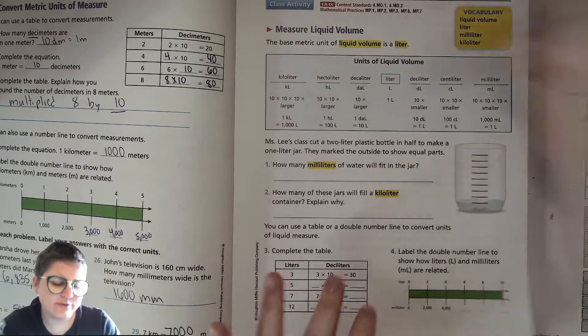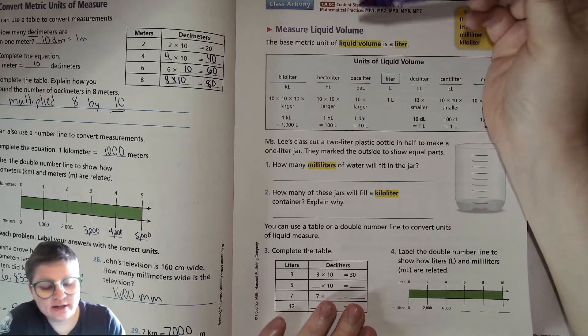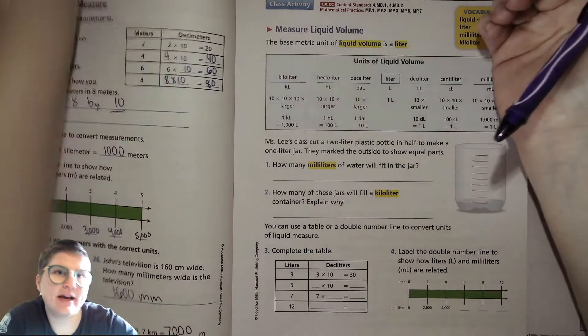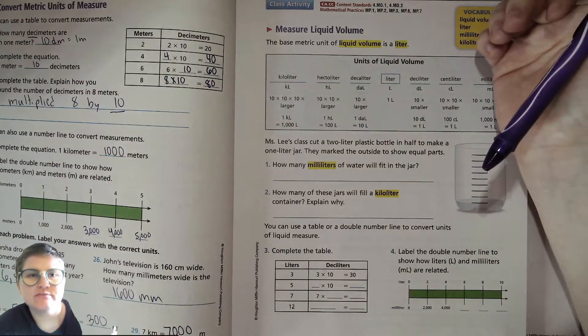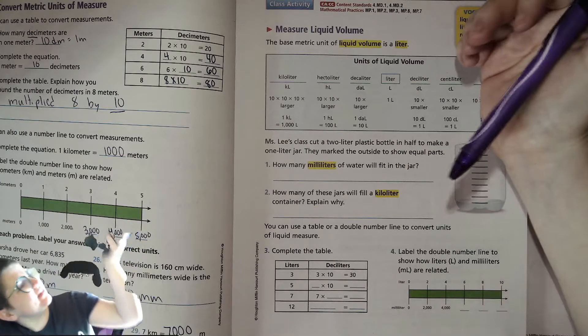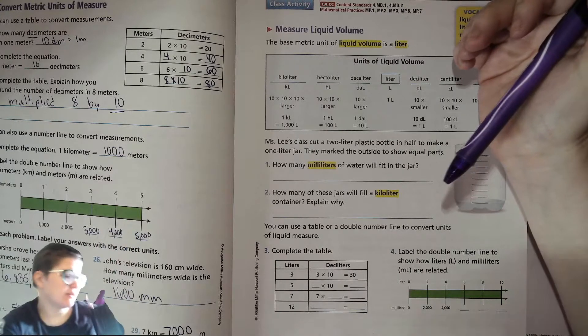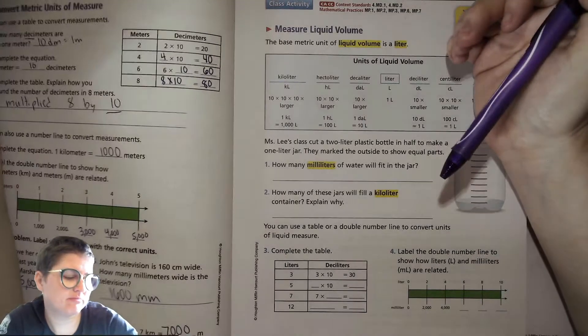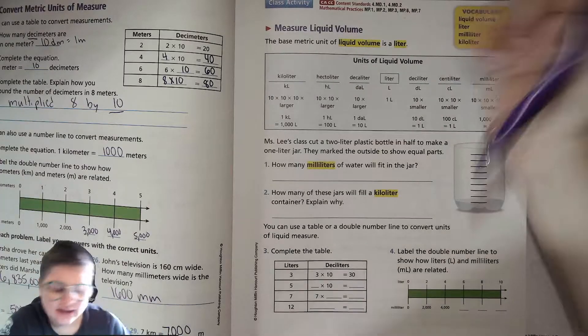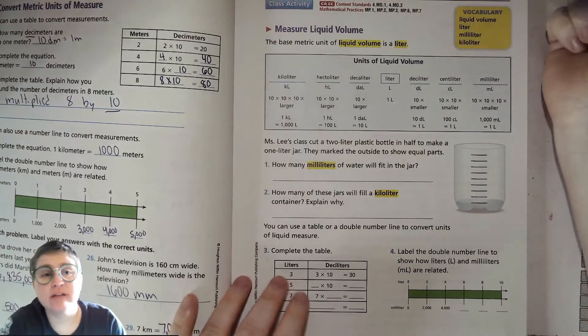Today, we're focusing a little bit more on liquid volume, which is like how much a container can hold. Like this is a cup that can hold, I think, maybe 24 ounces or something like that.